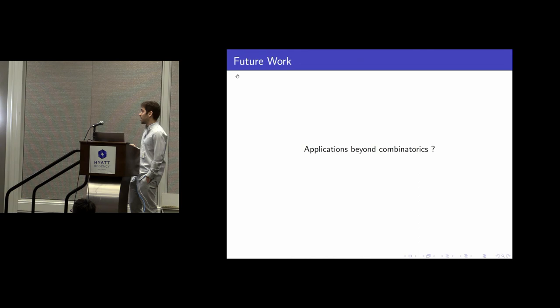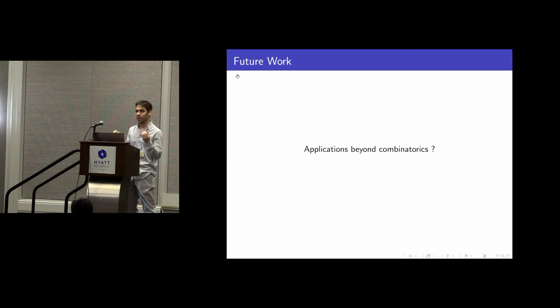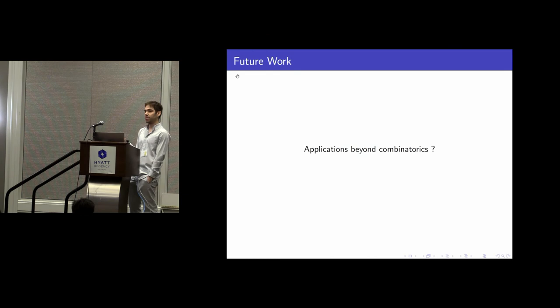As future work, one thing I would like to do is the following. What I've shown, at the end of the day, is a linear algebraic statement for how you can bound the spectral radius or norms of matrices when you know they can be decomposed into a sum of sparse matrices. I would like to use these ideas beyond combinatorics — for example in control theory and similar areas.